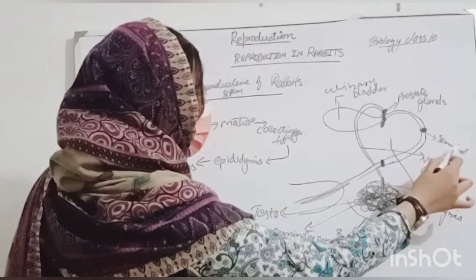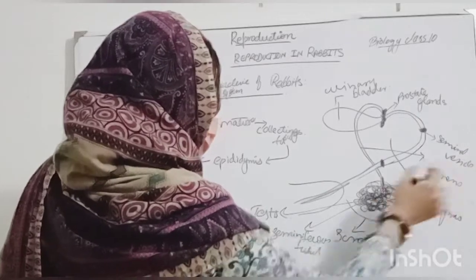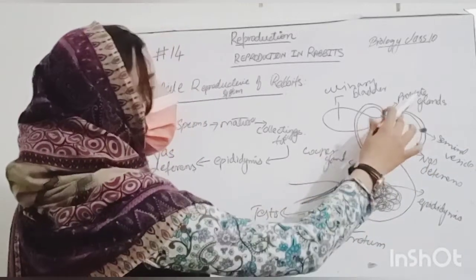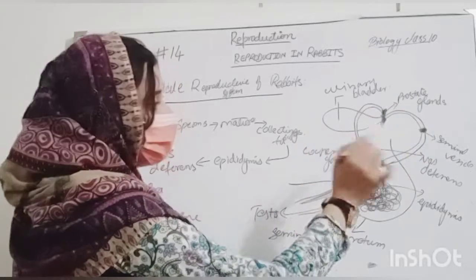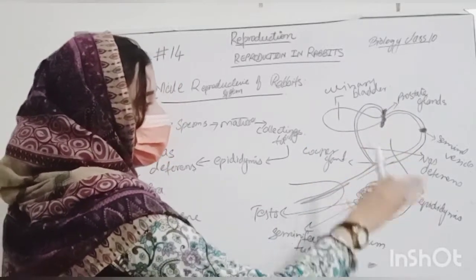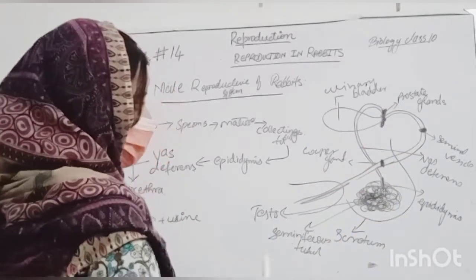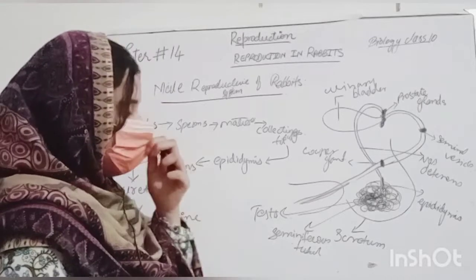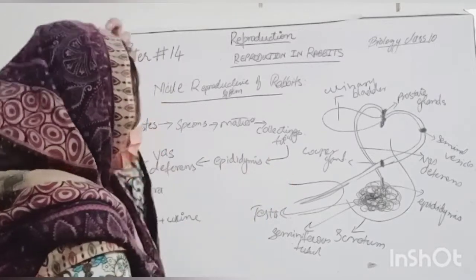And this gland, this is seminal vesicles and this is Cooper's gland students see. This gland, this is a procedure male reproductive system of rabbits.